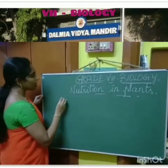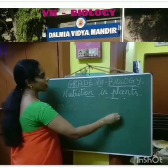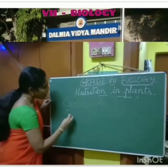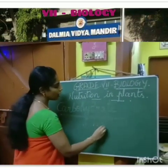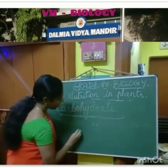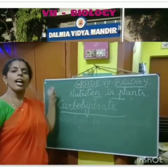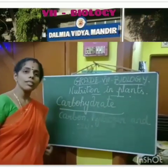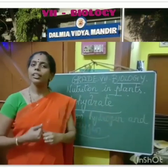What we have seen is that the food plants take is carbohydrates. What do carbohydrates consist of? Carbohydrates consist of Carbon, Hydrogen, and Oxygen molecules. Apart from Carbon, Hydrogen, and Oxygen, some other nutrients are also needed for the plants for their growth.